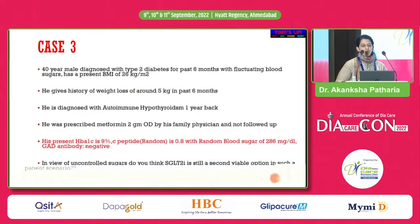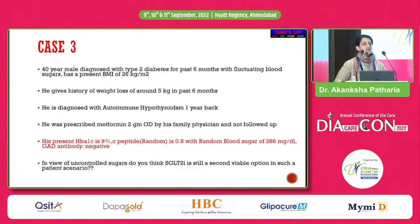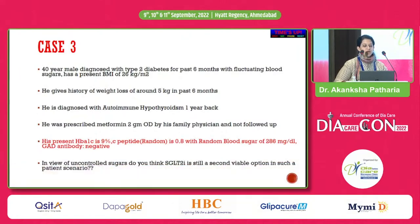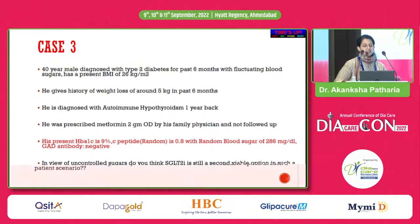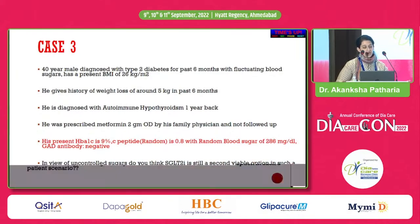Case 3: A 40-year-old male with type 2 diabetes for six months, uncontrolled sugars, BMI 26, 5 kg weight loss over six months, and a history of autoimmune hypothyroidism — suggesting possible LADA. Prescribed metformin 2g without a second drug. On evaluation, HbA1c is 9%, C-peptide 0.8, random sugar 286, but GAD antibody is negative. This could be beta-cell fatigue or the SIDD category discussed earlier. Do you think SGLT2 inhibitors can be used here? I don't think so.